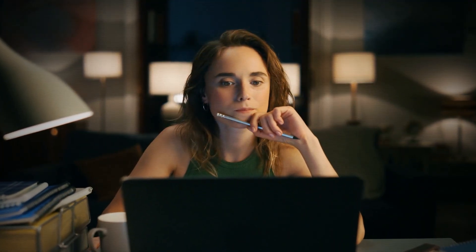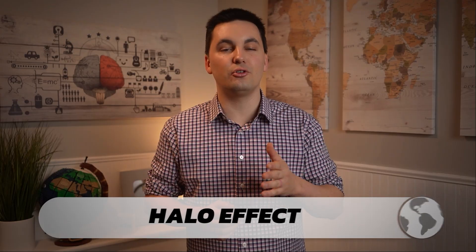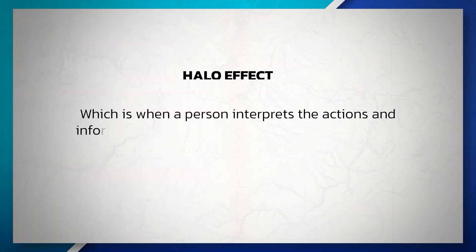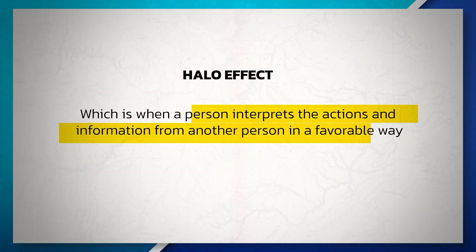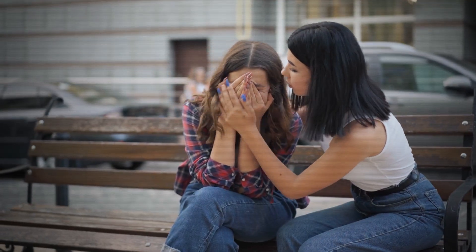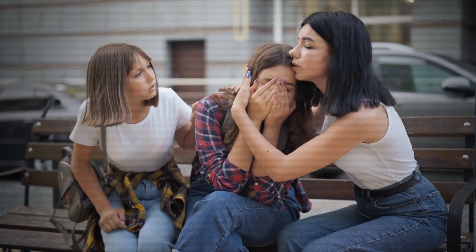Changing gears, let's say we are viewing the actions of someone we look favorably on — maybe because they had a good first impression on us or a positive impact on our lives. We will most likely view them with a phenomenon known as the halo effect, which is when a person interprets the actions and information from another person in a favorable way. This would explain why when your friend fails a test, you're more likely to empathize with them and say the test was not fair or that the teacher was being mean.